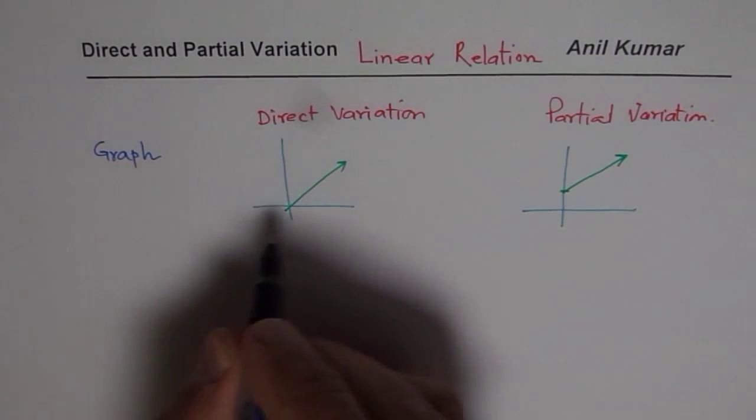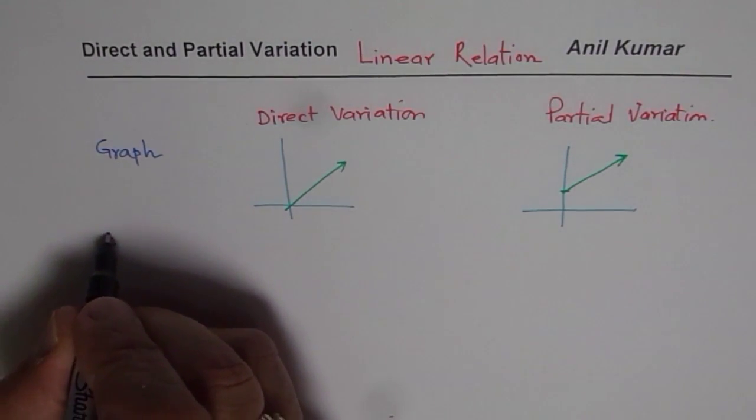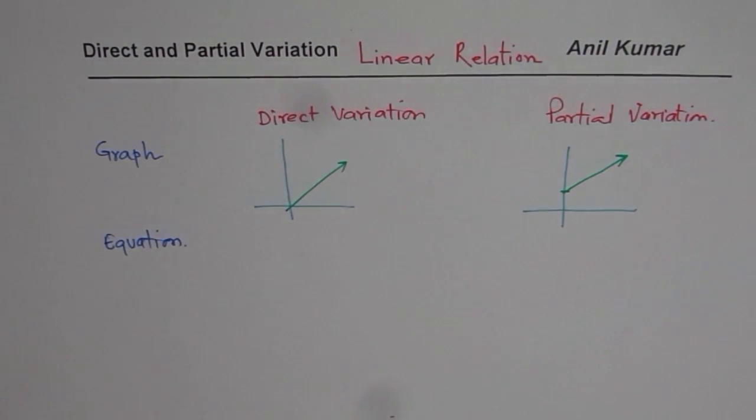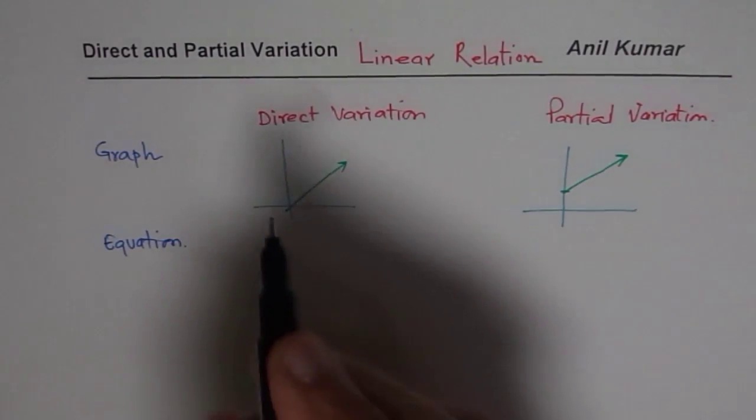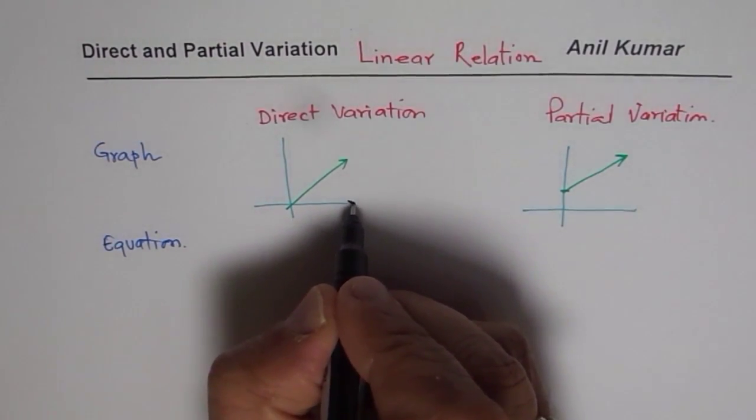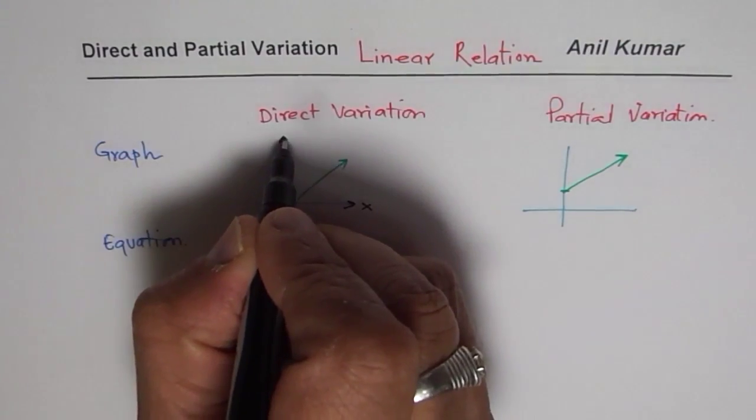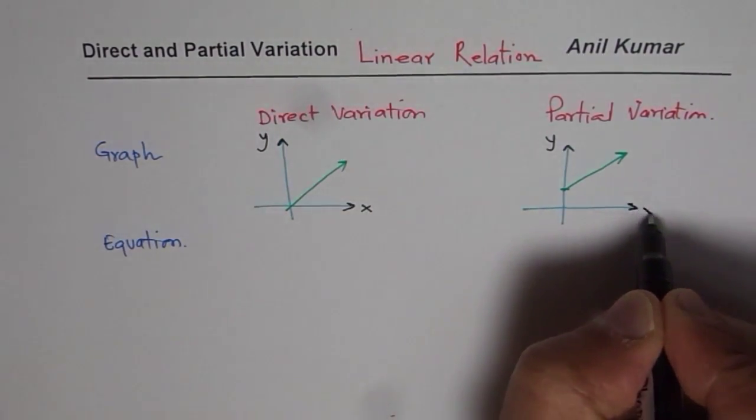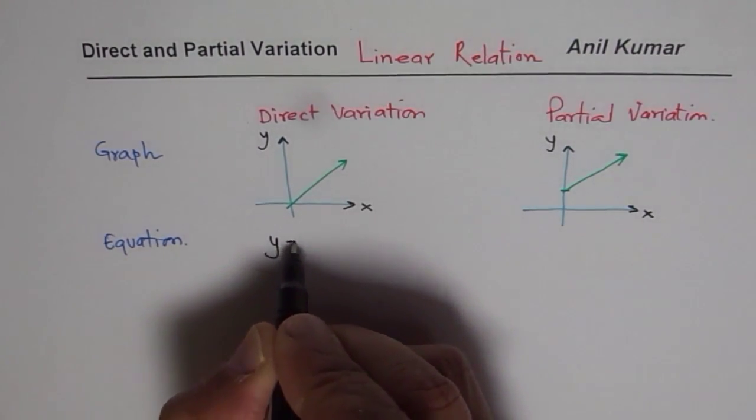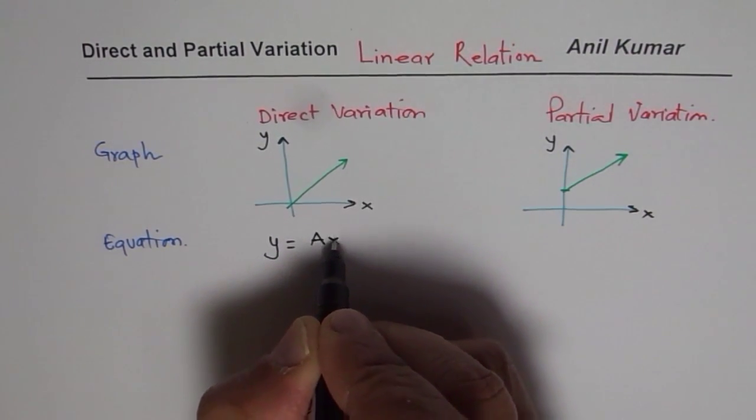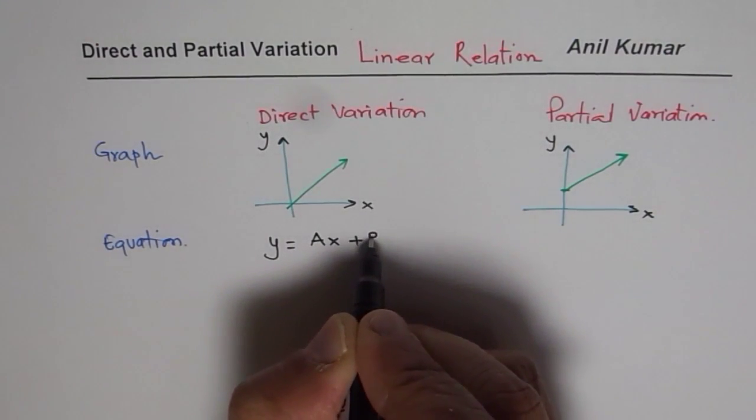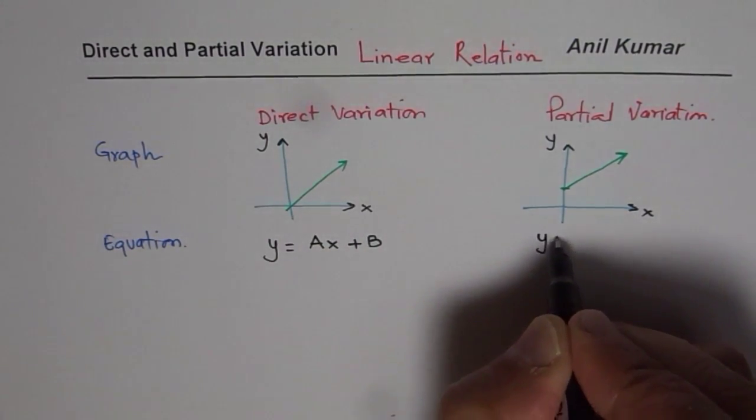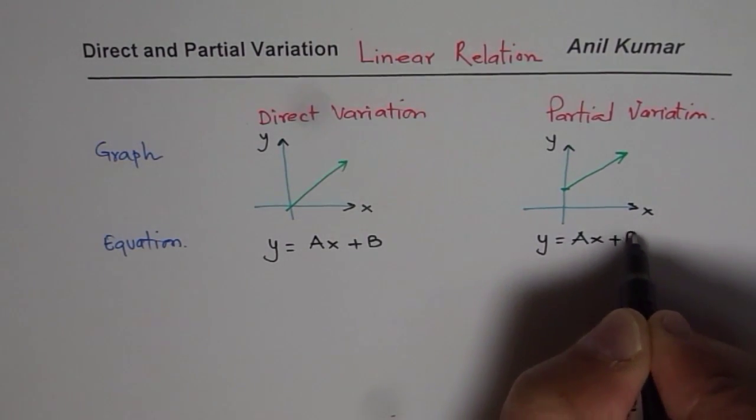You could also find whether given equation represents direct variation or not. Equation of the form, let us say if on this side we have independent variable x and y is dependent as normally we take. So if the equation is y equals to ax plus b, then it is partial. So I should have written here y equals to ax plus b.